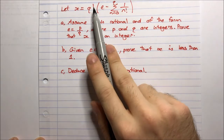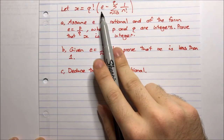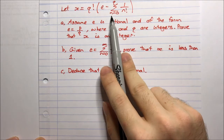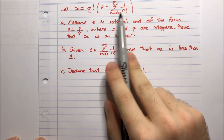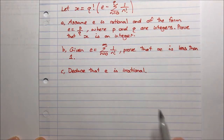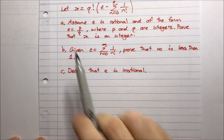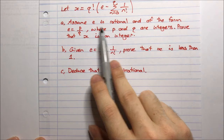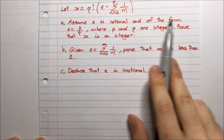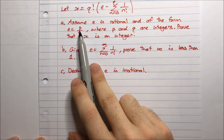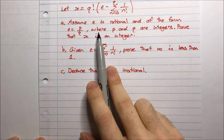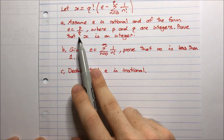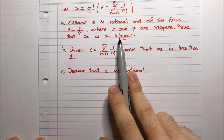Let x equal q factorial times the quantity of e minus the sum from n equals 0 to q of 1 on n factorial. Part A: Assume e is rational and of the form e equals p on q, where p and q are integers. Prove that x is an integer.